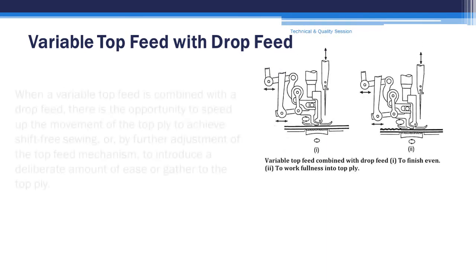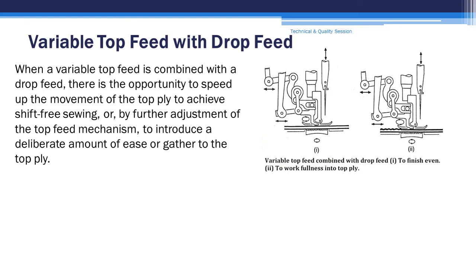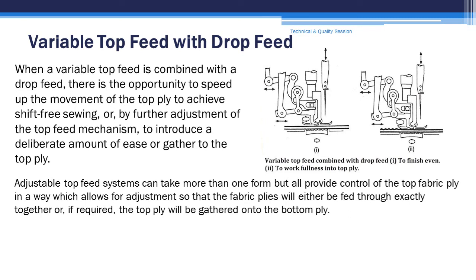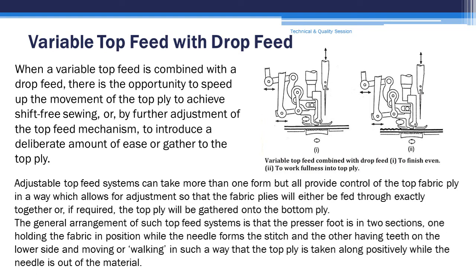Variable top feed with drop feed. When a variable top feed is combined with a drop feed, there is the opportunity to speed up the movement of the top ply to achieve shift-free sewing, or by further adjustment of the top feed mechanism to introduce a deliberate amount of ease or gather to the top ply. Figure 1 shows finishing even; Figure 2 shows working fullness into the top ply. Adjustable top feed systems can take more than one form but all provide control on the top fabric ply, allowing adjustment so that the fabric plies will either be fed through exactly together or the top ply will be gathered onto the bottom ply. The general arrangement is that the presser foot is in two sections: one holding the fabric in position while the needle forms the stitch, and the other having teeth on the lower side and moving in such a way that the top ply is taken along positively while the needle is out of the material.